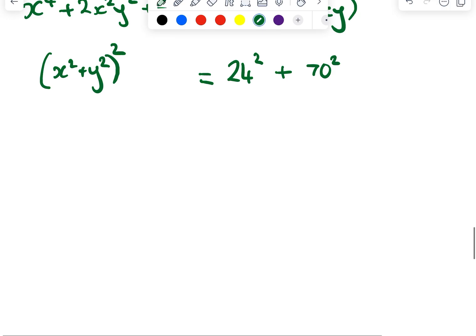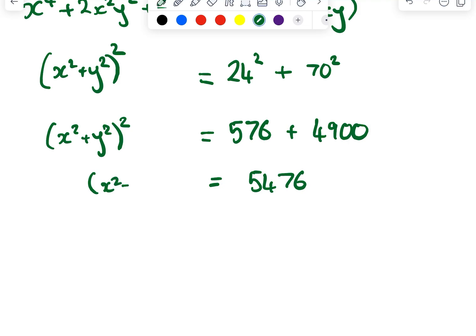Okay so let's write down some things here. So I now know that x squared plus y squared squared is going to be 24 squared which is 576 and 70 squared is 4900. So when I add these two together I get 5476.